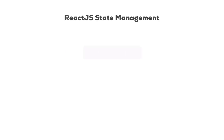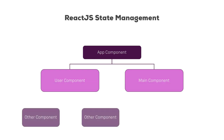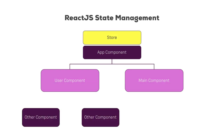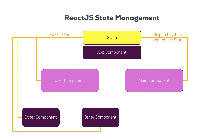Back to the previous example: we had our app component with all the other components, but now we also have the store. If we want to change something in the user component from the main component, we dispatch the action, reduce the state, and then pass the state to all interested components. That's all — that's the theory. Let's start seeing this in action.